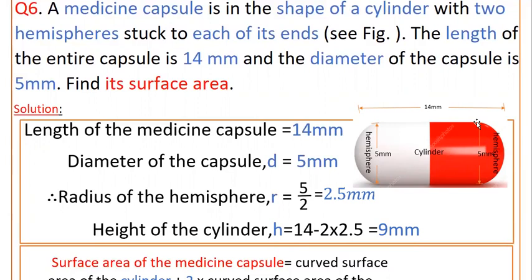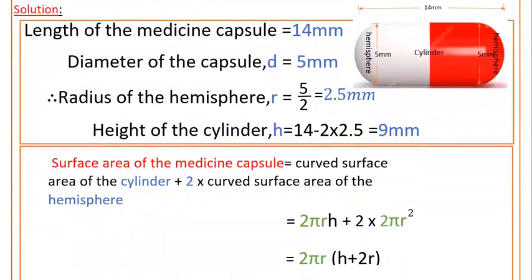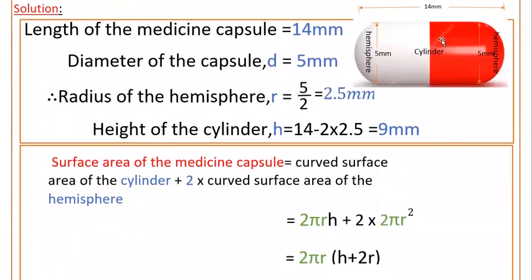So that is 9 mm. Here we have to find the entire surface area. Surface area of the medicine capsule equals curved surface area of the cylinder plus 2 times curved surface area of hemisphere. So here there are two hemispheres.